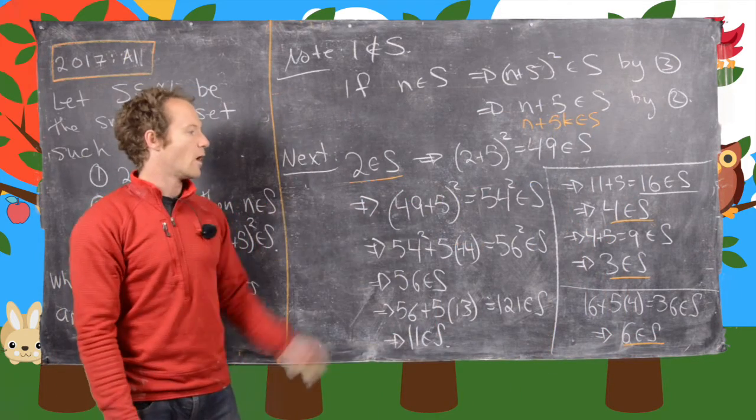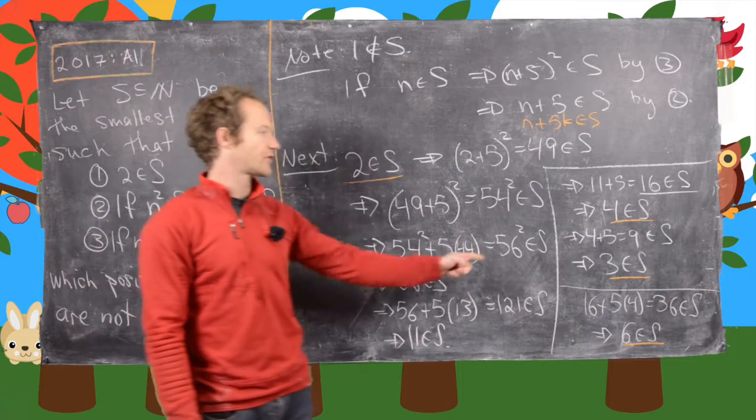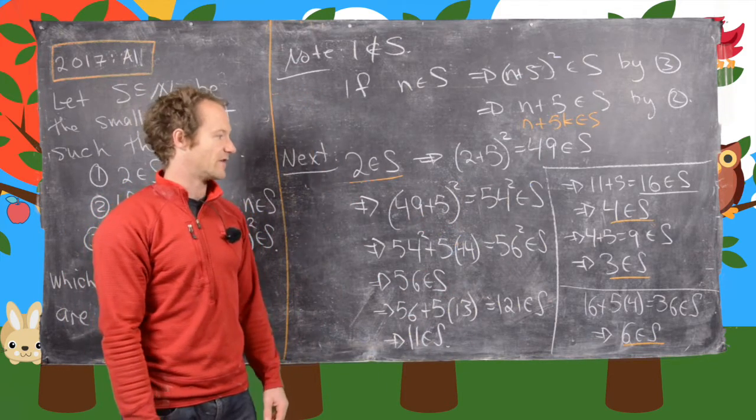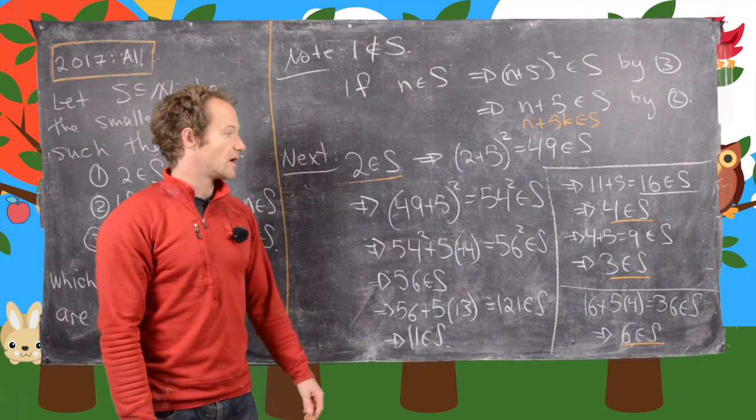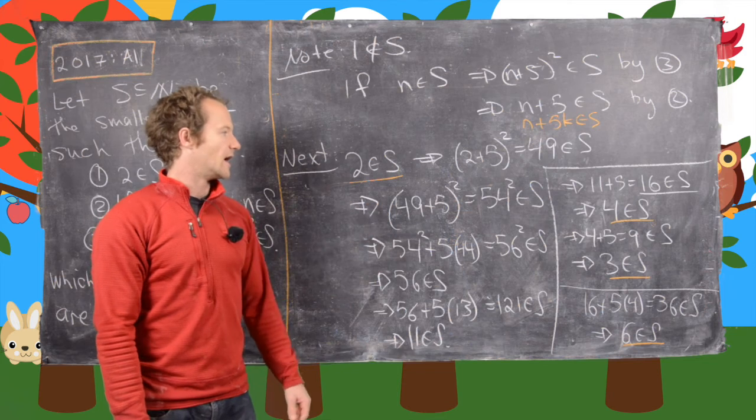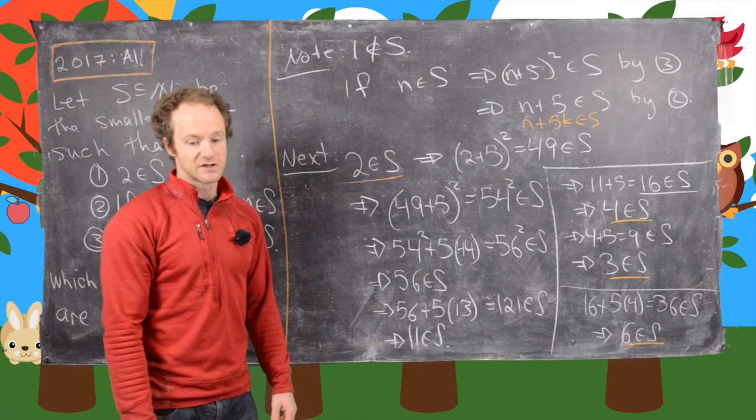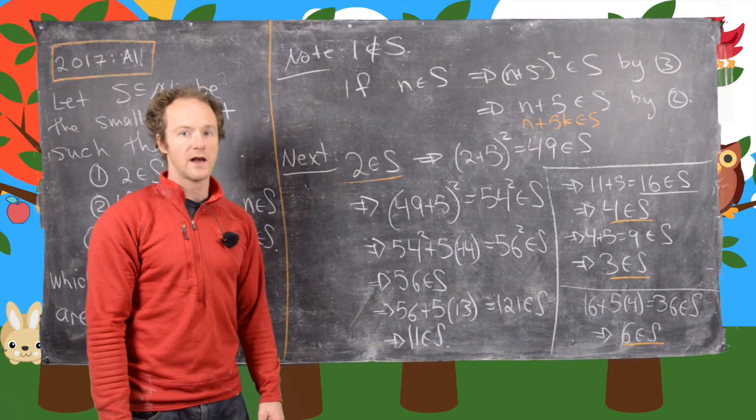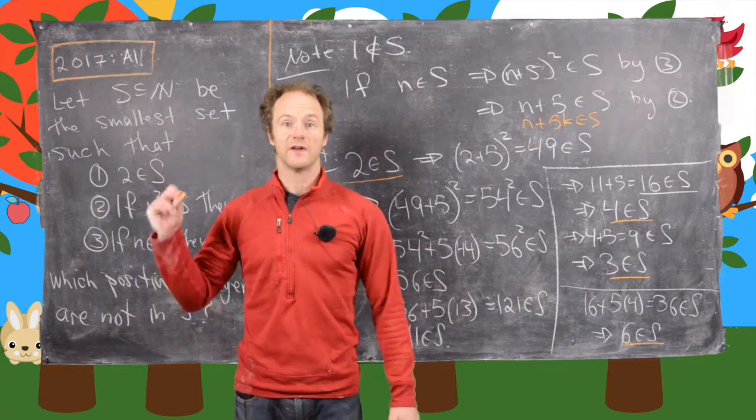So now what we've noticed is that 1 is not an element of S, but 2, 3, 4, and 6 are. 5 does not seem to be an element of S. But then since 2, 4, 3, and 6 are, then everything, all multiples of 5 plus those numbers are also an element of S. So it looks like S is everything except for 1 and multiples of 5. So I'll clean up the board and then we'll go from there proving that.